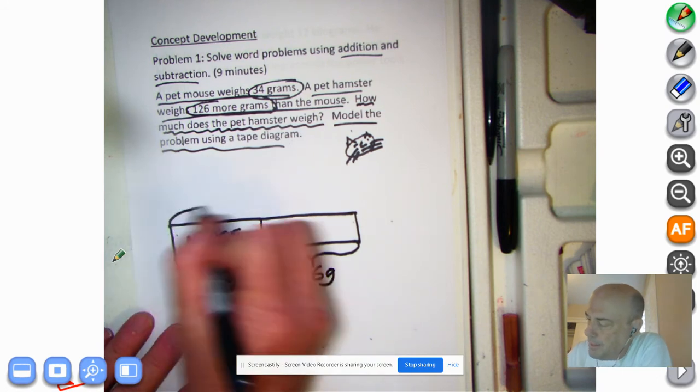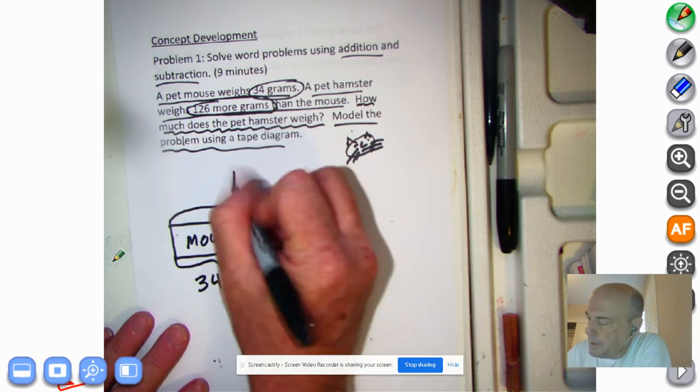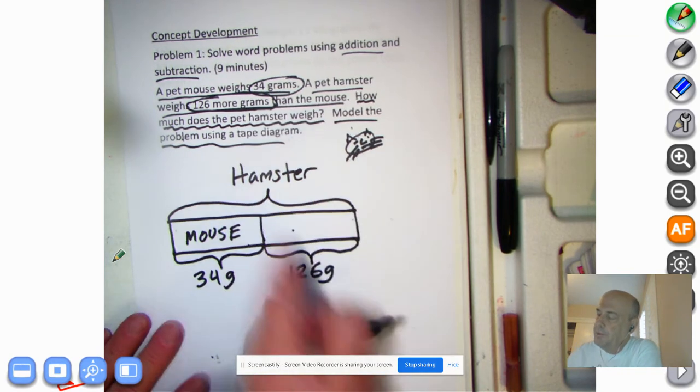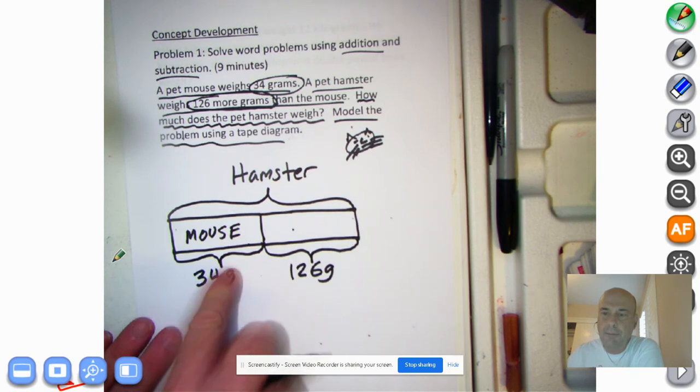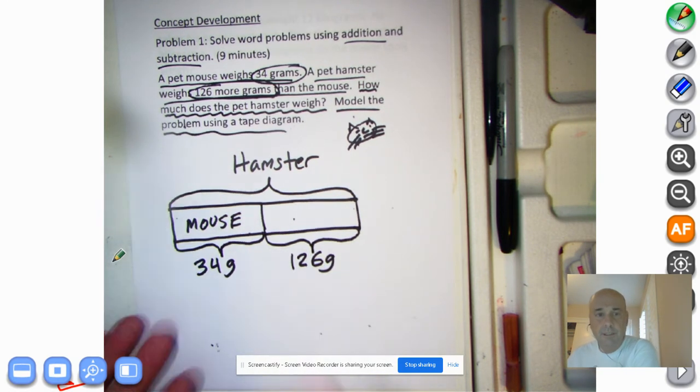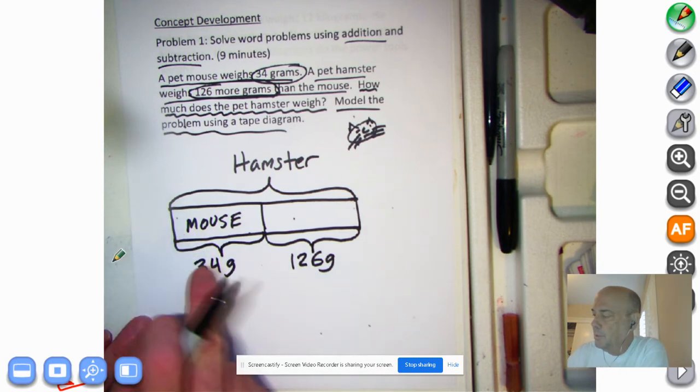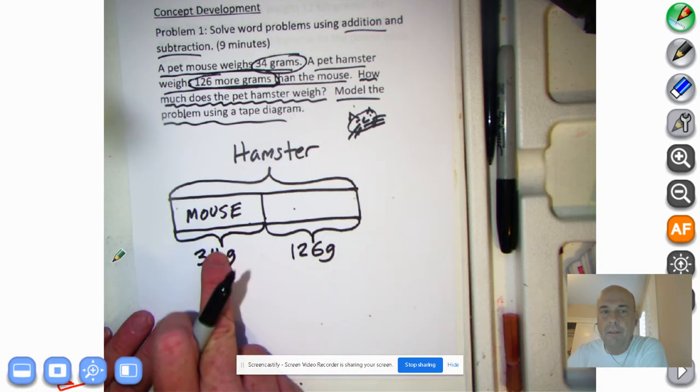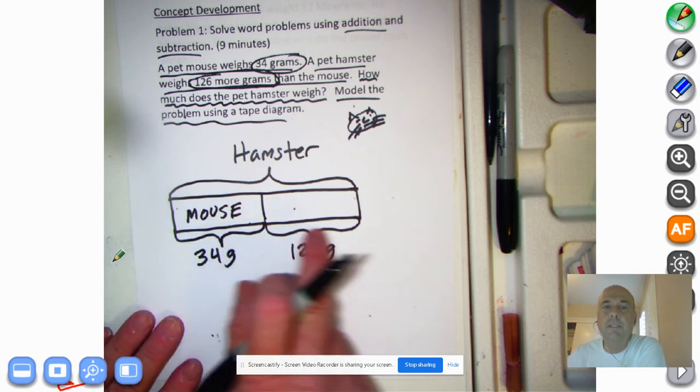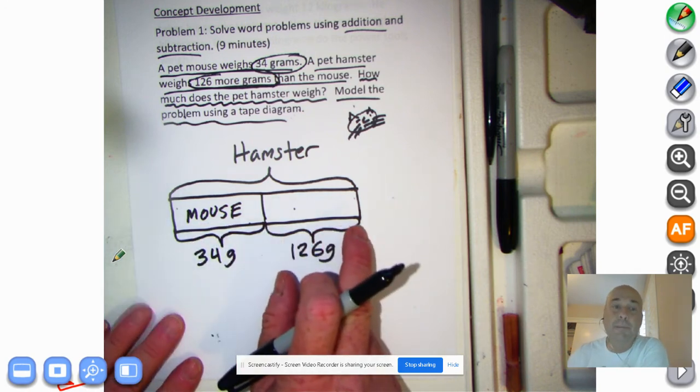So this isn't what the hamster weighs. He weighs 126 grams more than the mouse. So what we're going to do is we're going to make another bracket up here and we're going to put hamster. Because the hamster weighs this much more than the mouse. The mouse weighs 34 grams. The hamster weighs this much more, right? Let's just take a look at this. The hamster weighs 126 grams more than the mouse, okay? So there's the mouse and there's the 126 grams more than the hamster weighs than the mouse.